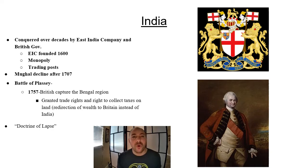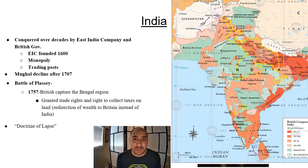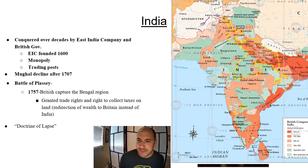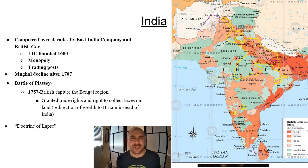By 1850, Britain ruled all of India either directly or through alliances with local Indian princes. Maps from this period show the growth of British control as well as the areas that were protectorates or collaborators with EIC and British forces.